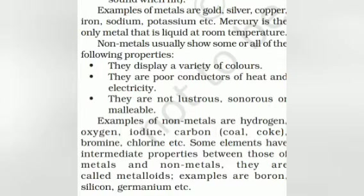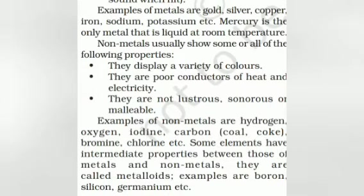Some elements have intermediate properties between those of metals and non-metals. They are called metalloids. Examples are boron, silicon, and germanium. Let us now move to a short video clip where your understanding of elements and compounds will become clearer.